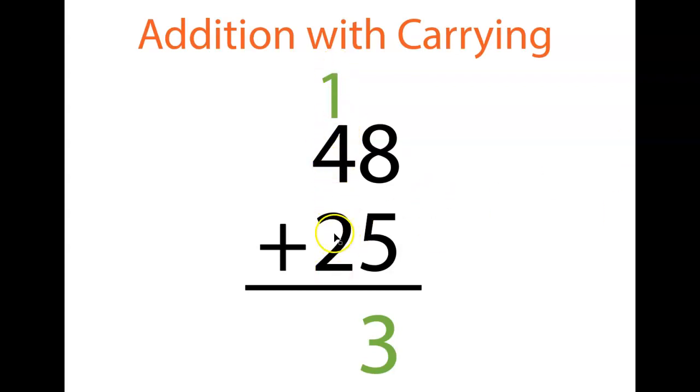Then we're gonna add these all up. Four plus two is six, plus one is seven. So we're gonna get 73 over there.